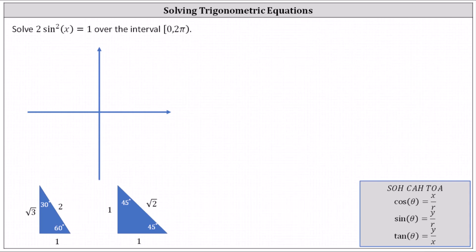Solve 2 sine squared x equals one over the interval from zero to two pi, closed on zero, open on two pi. Beginning with the given equation, we first isolate sine squared x by dividing both sides by two. Simplifying, we have sine squared x equals one half.